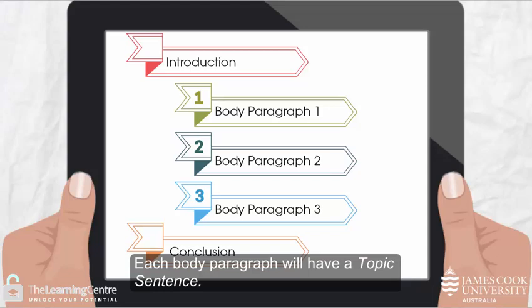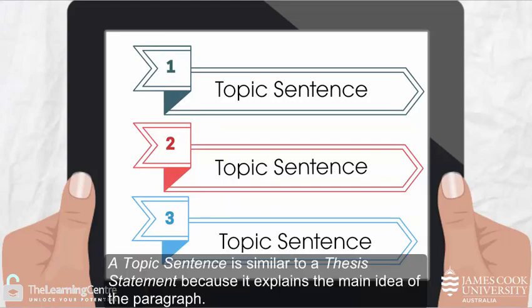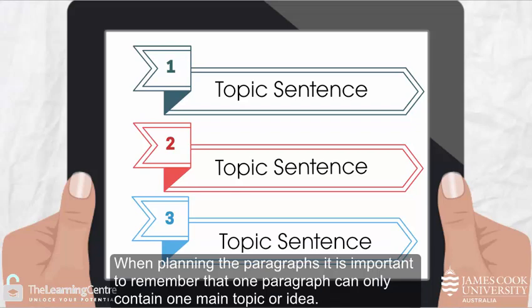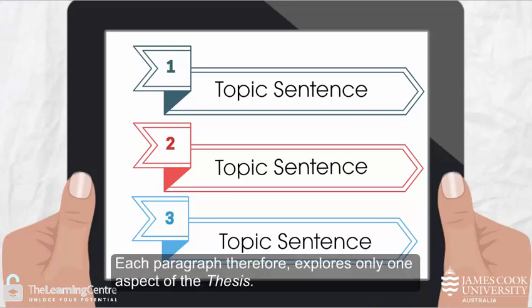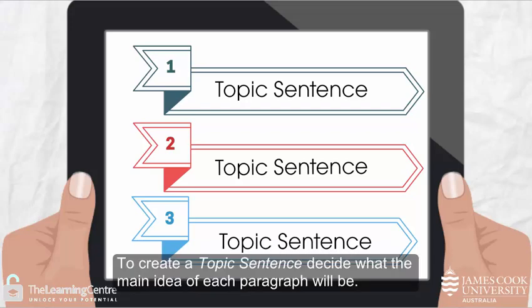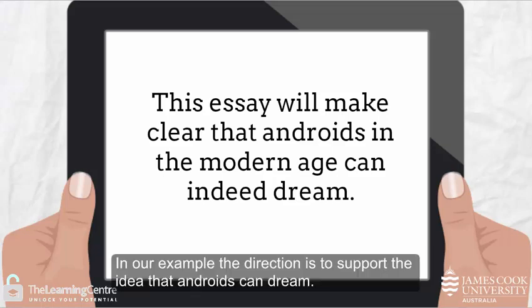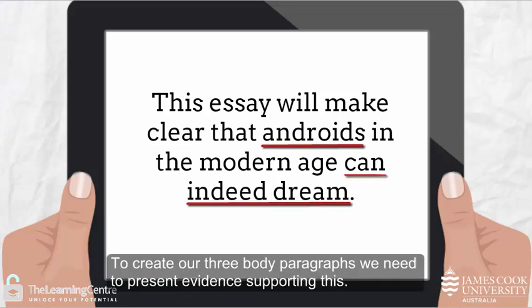Each body paragraph will have a topic sentence. A topic sentence is similar to a thesis statement because it explains the main idea of the paragraph. When planning the paragraphs it is important to remember that one paragraph can only contain one main topic or idea. Each paragraph therefore explores only one aspect of the thesis. To create a topic sentence, decide what the main idea of each paragraph will be. To do this it is helpful to return to the thesis statement. In our example the direction is to support the idea that androids can dream.